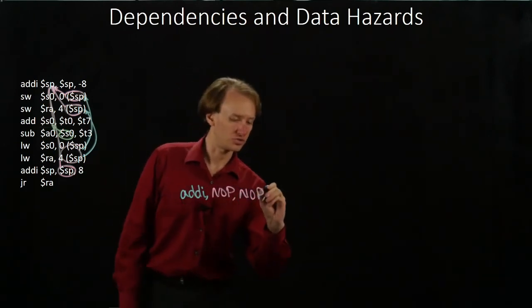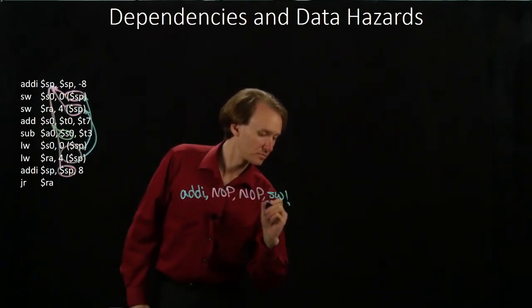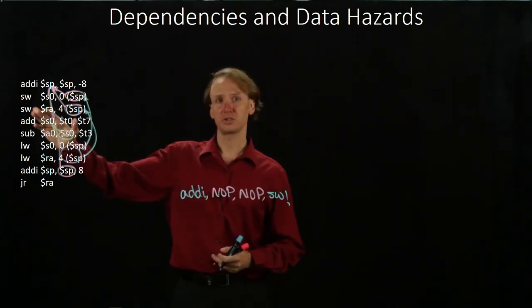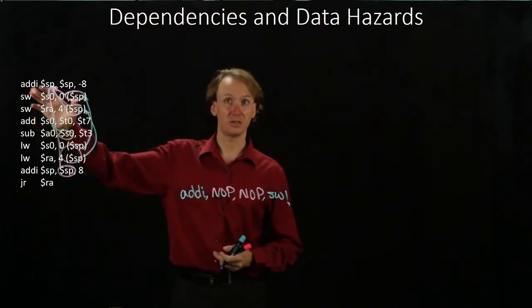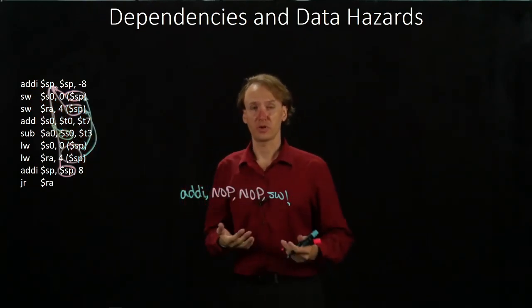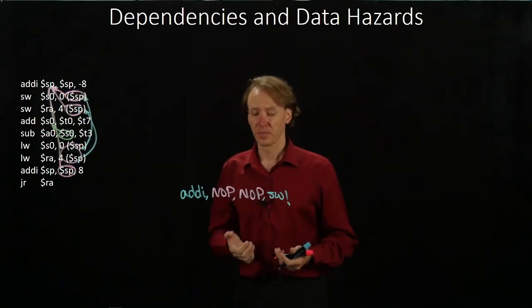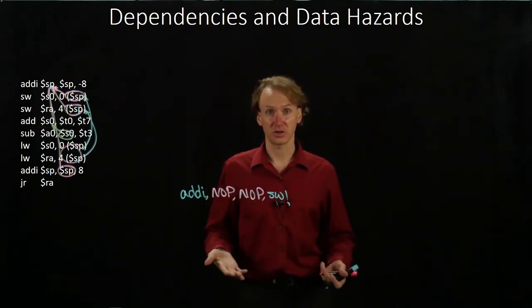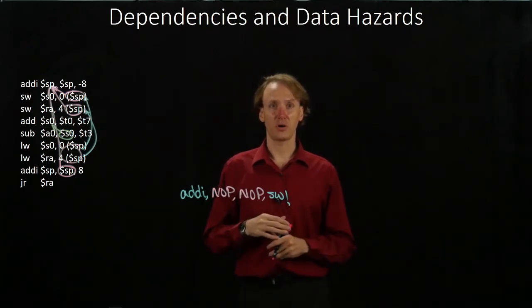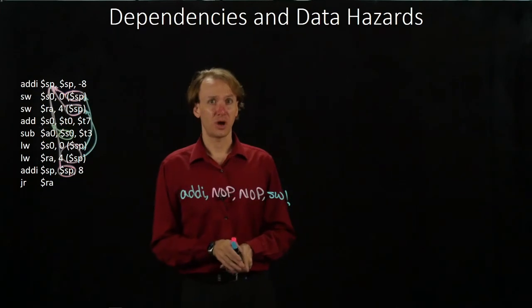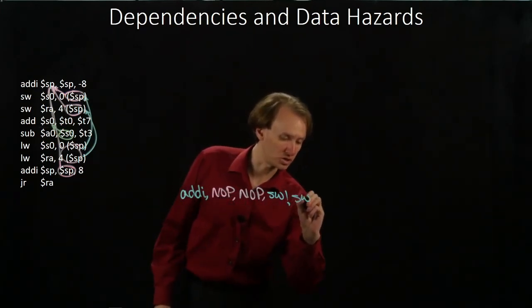And then I can run that store word instruction. My second store word instruction also wants to use the results of that first add immediate instruction. So I definitely need to wait two cycles before I can run that second store word instruction. Fortunately it's been three cycles since that instruction started already. So I won't have any problems. I had to wait two cycles for the first store word. So I don't have to wait anymore to run the second store word instruction.